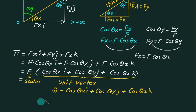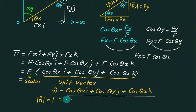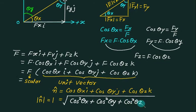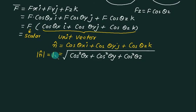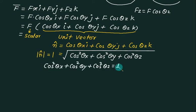The magnitude of a unit vector is always 1. Therefore, 1 equals the square root of cos²(theta_x) + cos²(theta_y) + cos²(theta_z), which gives the identity: cos²(theta_x) + cos²(theta_y) + cos²(theta_z) = 1. This is the 3D identity, analogous to sin²θ + cos²θ = 1 used in 2D.